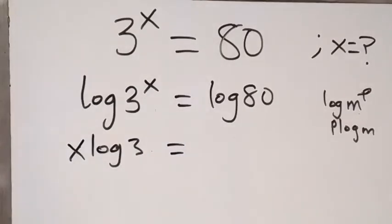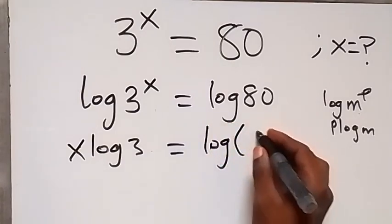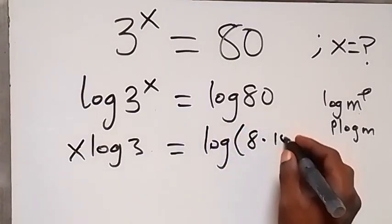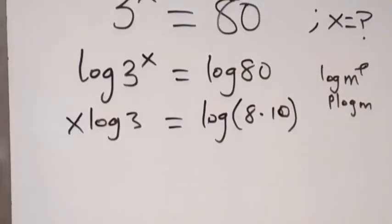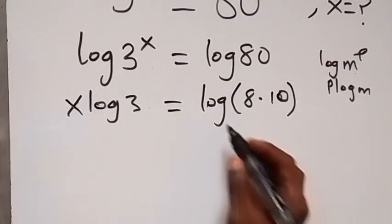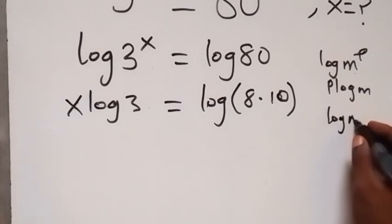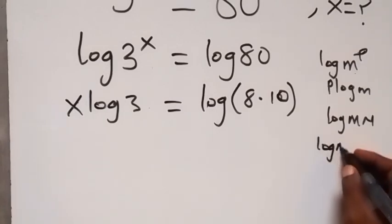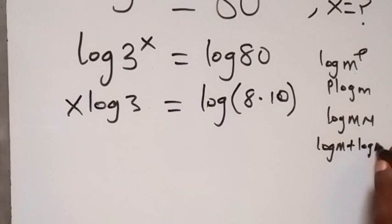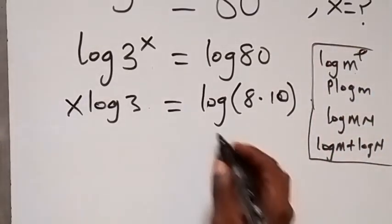Equals to, here we can express log 80 as log 8 multiplied by 10. When we apply product law of log, log m multiplied by n can be separated as log m plus log n. That's from the law of indices.